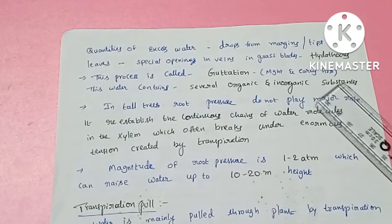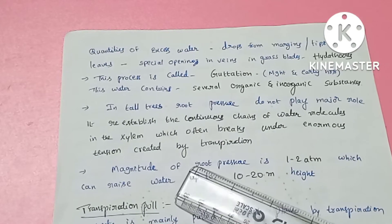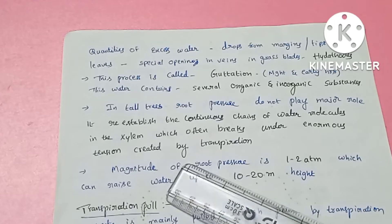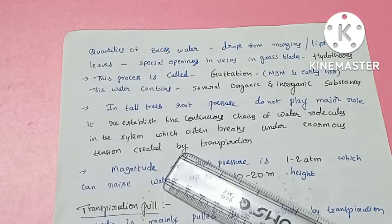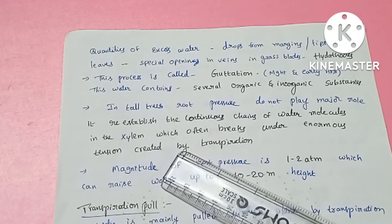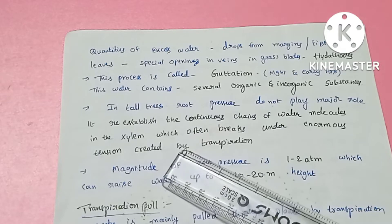The transpiration creates tension in the xylem vessels. Xylem channels are formed and water molecules form a continuous chain within them.